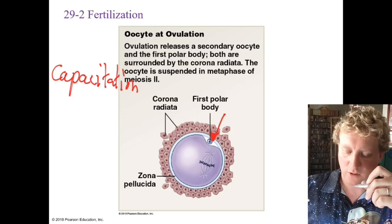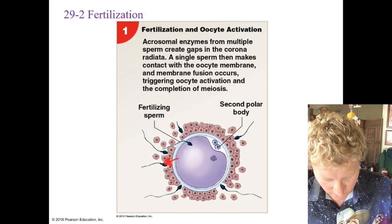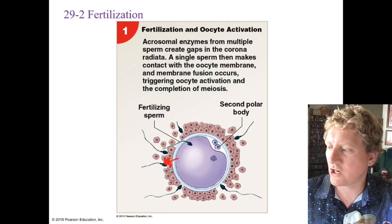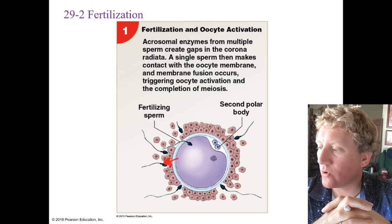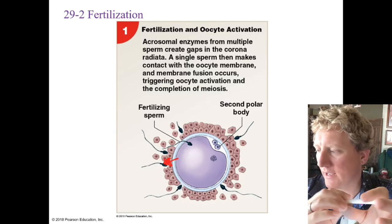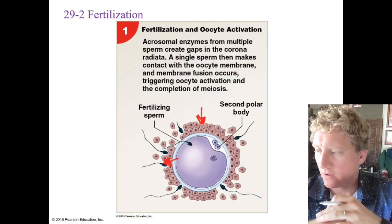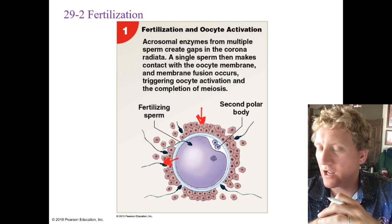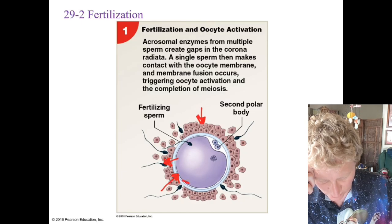With the actual fertilization process, the acrosome — the cap of the sperm — releases enzymes that penetrate the corona radiata. Two proteins are released: hyaluronidase breaks down the bonds between the cells forming that cellular layer around the oocyte, and acrosin helps penetrate the zona pellucida to reach the actual egg itself.